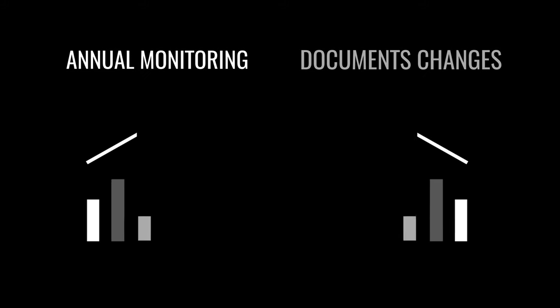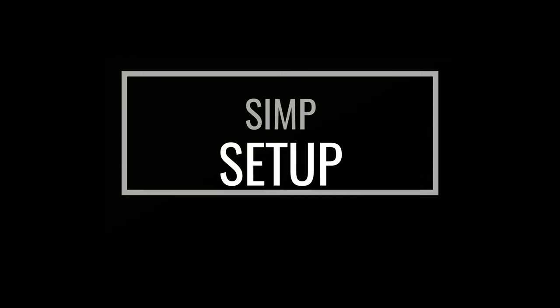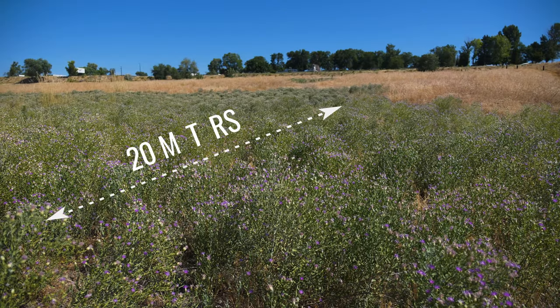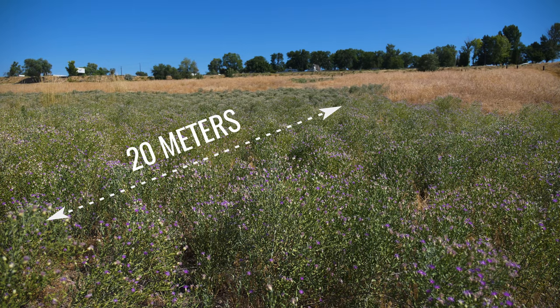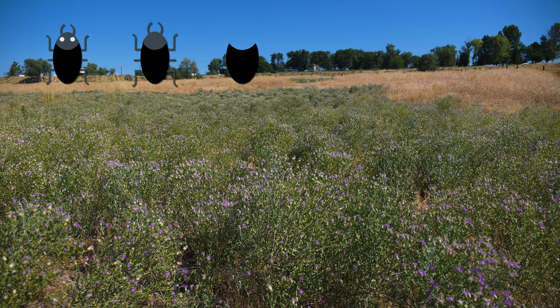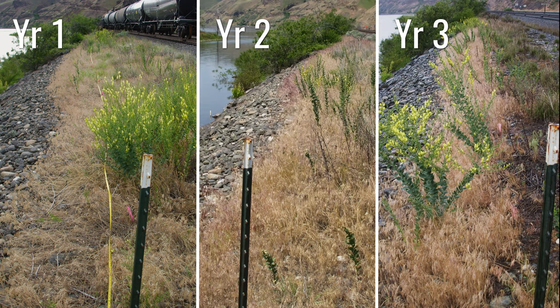When conducted annually, the protocol documents changes that occur over time. SIMP is based upon a permanent 20-meter vegetation sampling transect, randomly placed in a suitable infestation of your target weed, along with repeating counts of your target biocontrol agent. The transect will only need to be established once in year one of your monitoring program, and that same transect will be utilized for monitoring visits in all subsequent years.